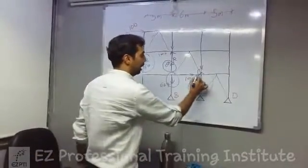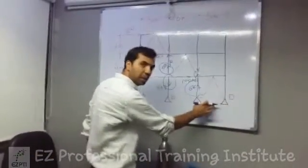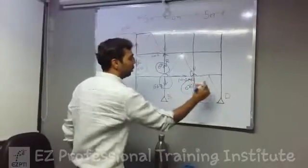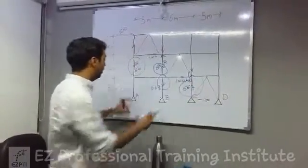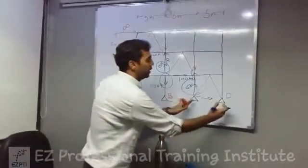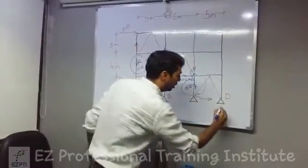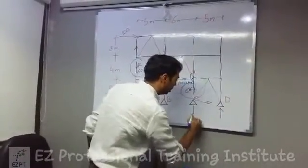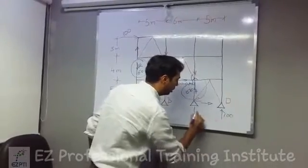At the last, again this load is getting transferred here. So again the moment will be 100 into 5, that means 500. And 500 divided by 5, again 100. So this will be the reaction, 100, 100.